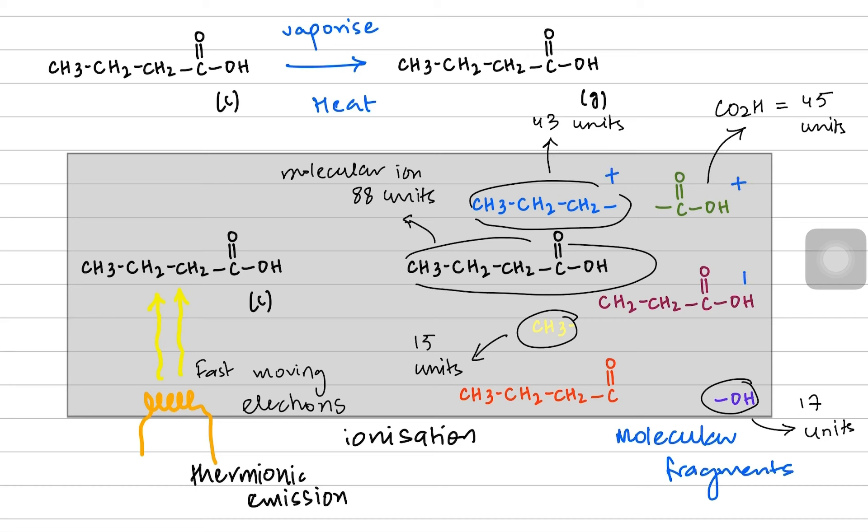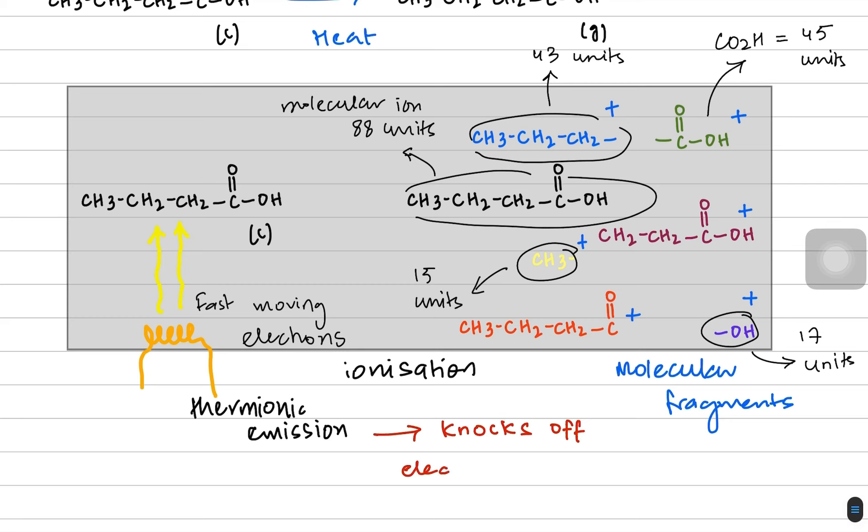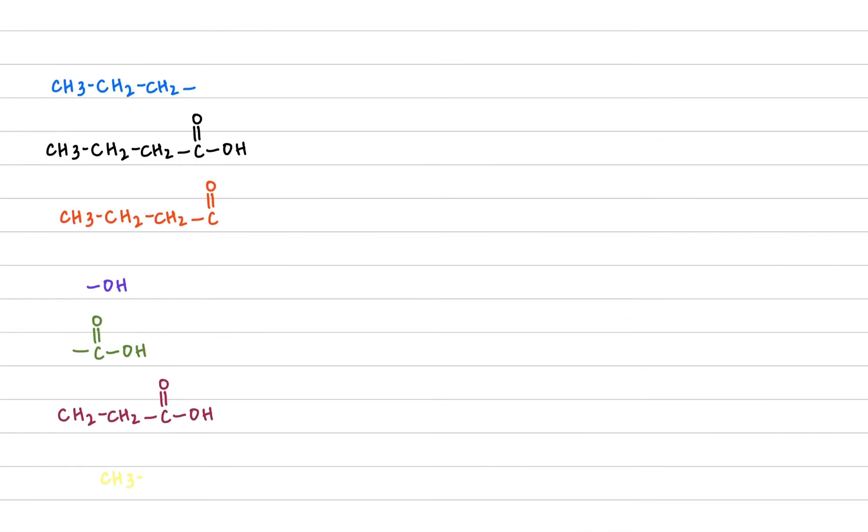We put a plus charge on all these fragments because they are not molecular fragments only, they are molecular ion fragments. Their electron has been knocked off. The thermionic emission knocks off electrons and makes them positive ions. So all these ions I've listed here have a positive charge on them and it is best to put a square bracket and a positive charge to communicate the idea that they are molecular ion fragments.